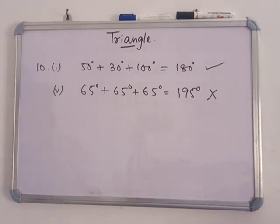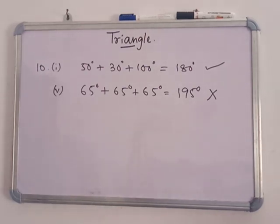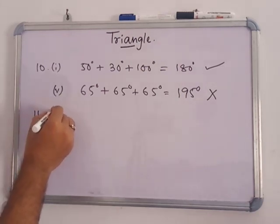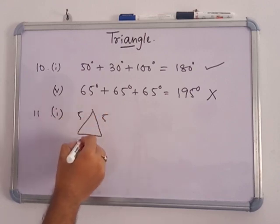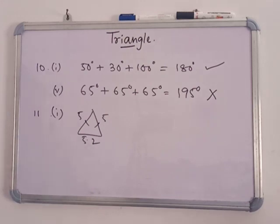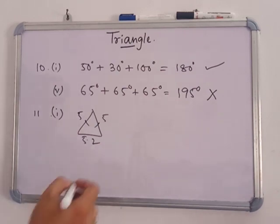In number 11, you have to justify which type of triangle is shown. In number 1, two sides are the same — both are 5 and 5, with the third side 5.2 — so this is an isosceles triangle. The next one is a right angle triangle. Then one with equal sides is an equilateral triangle. The last one, where all sides are unequal, is a scalene triangle.